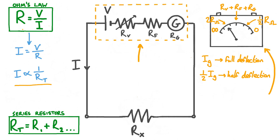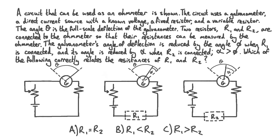A circuit that can be used as an ohmmeter is shown. The circuit uses a galvanometer, a direct current source with a known voltage, a fixed resistor, and a variable resistor. The angle theta is the full-scale deflection of the galvanometer. Two resistors R1 and R2 are connected to the ohmmeter so that their resistances can be measured. The galvanometer's angle of deflection is reduced by angle phi when R1 is connected, and reduced by alpha when R2 is connected. Which of the following correctly relates the resistances of R1 and R2? (a) R1 equals R2, (b) R1 is less than R2, or (c) R1 is greater than R2.